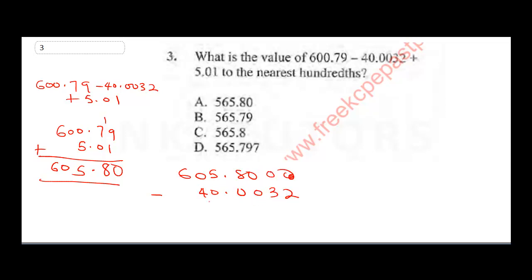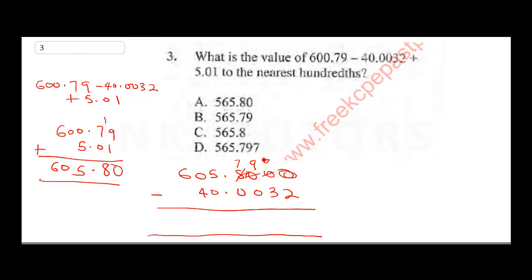Now subtract 40.0032 from 605.80. Add zeros as placeholders. Borrow from the appropriate columns: here becomes seven, then nine, then ten. Ten minus 2 is 8, nine minus 3 is 6, nine minus 0 is 9, seven minus 0 is 7, five minus 0 is 5, and 60 minus 4 gives 56.